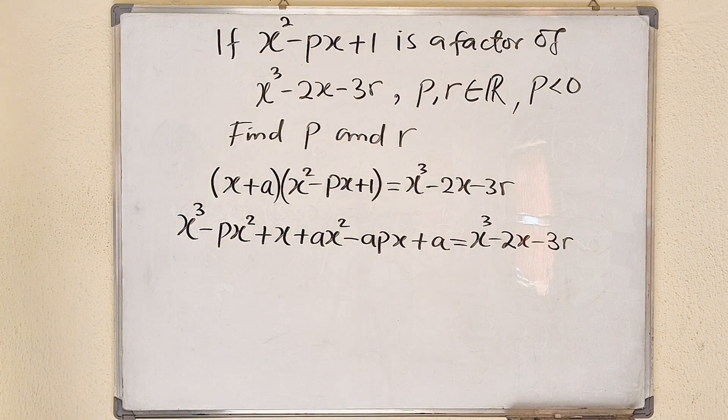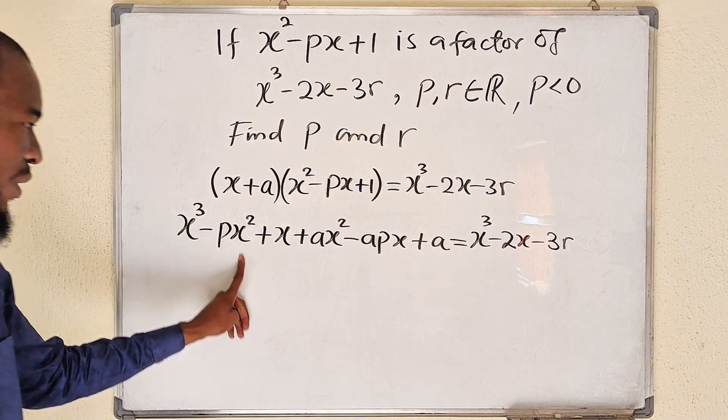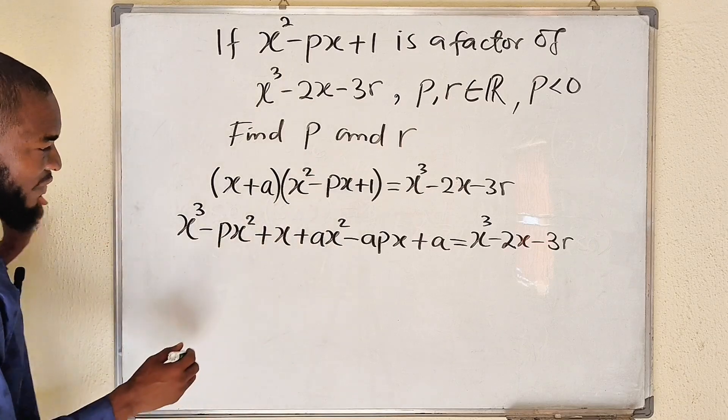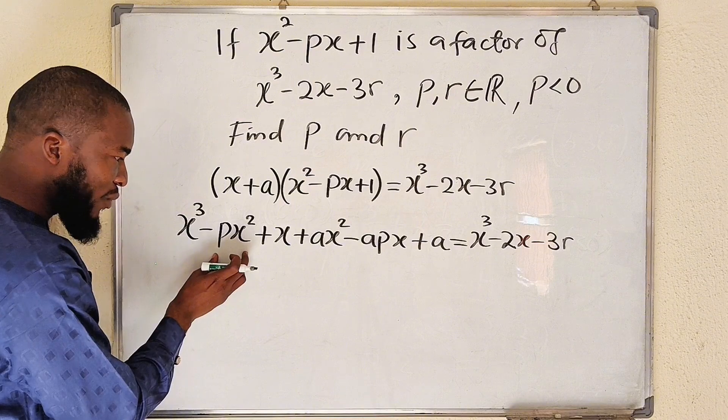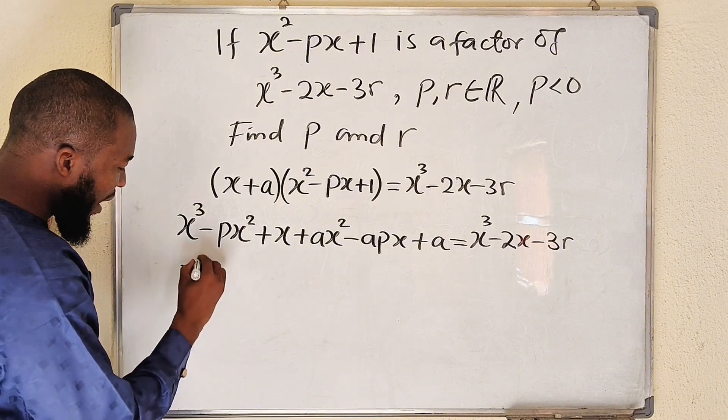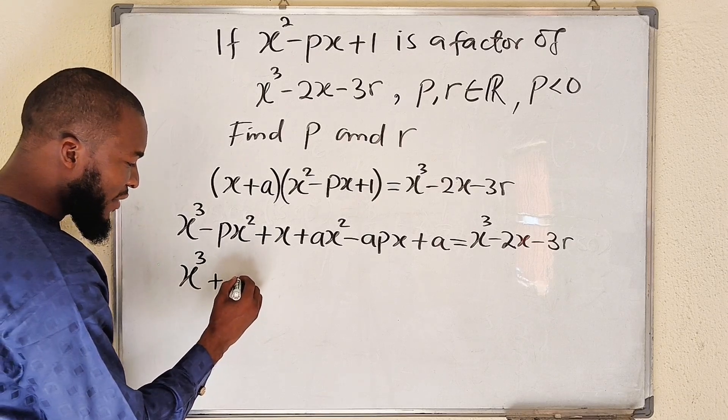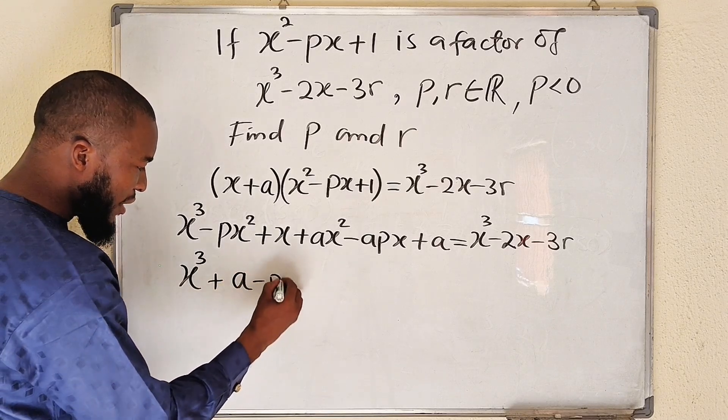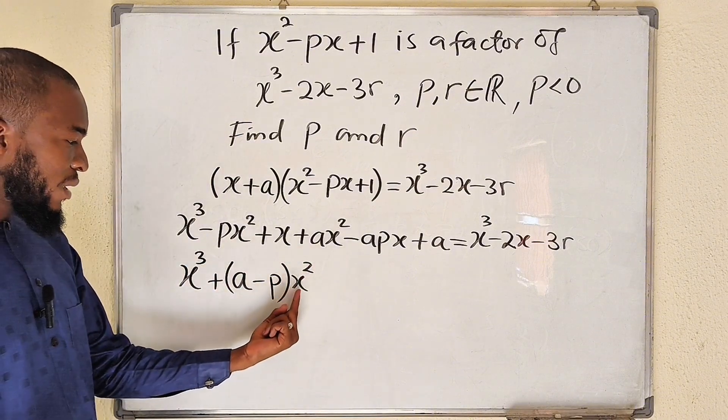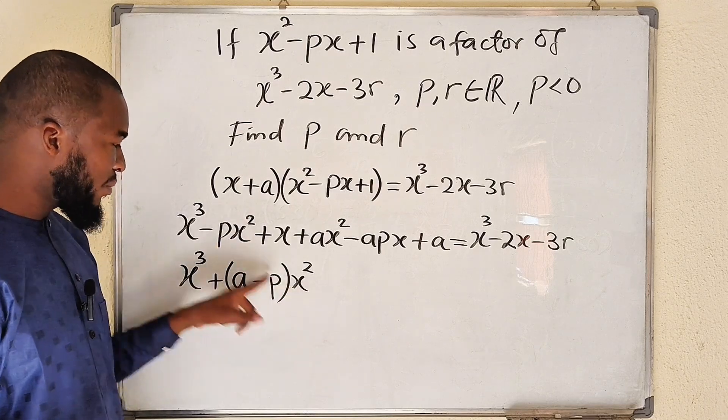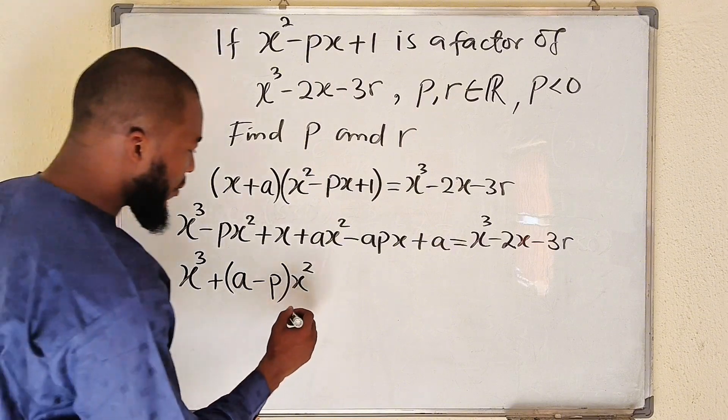So now let us relate the coefficients. But before then, I would like to connect the like terms because I can see x squared here and I have another one here. So this implies that ax squared minus px squared. So this is x cubed plus, I can even write the coefficients like a minus p, then multiply by x squared. Then with x, I can see this.